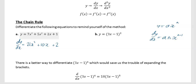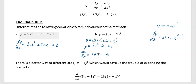We're going to use the chain rule to do this type of question in future. But in AS what we would have done is just multiplied out the bracket: 3x minus 1 times 3x minus 1, giving 9x² minus 6x plus 1. You could then differentiate to get 18x minus 6.